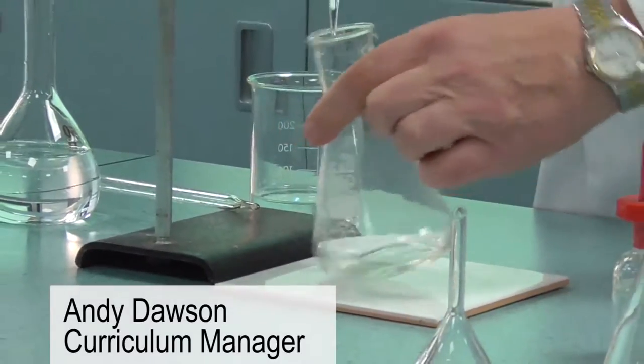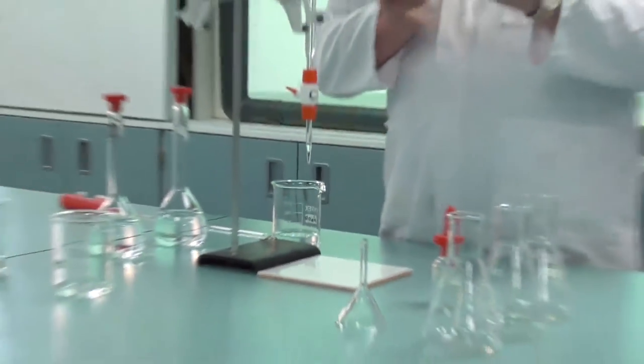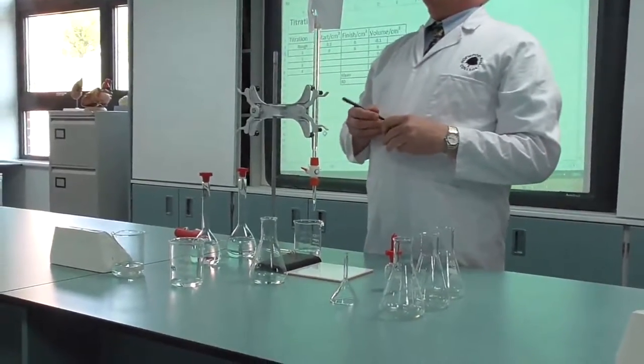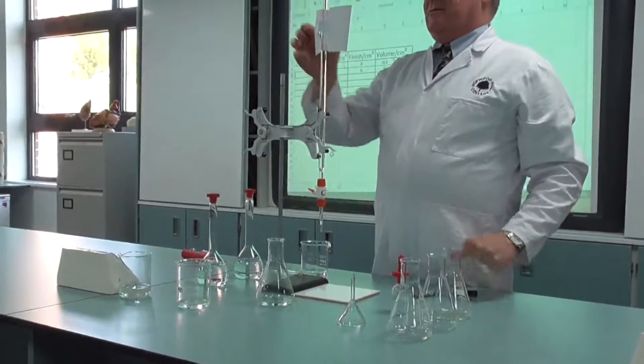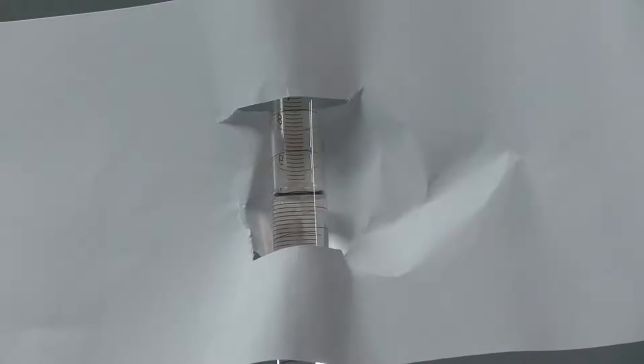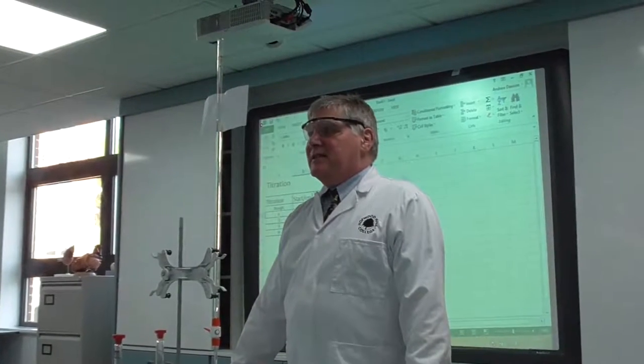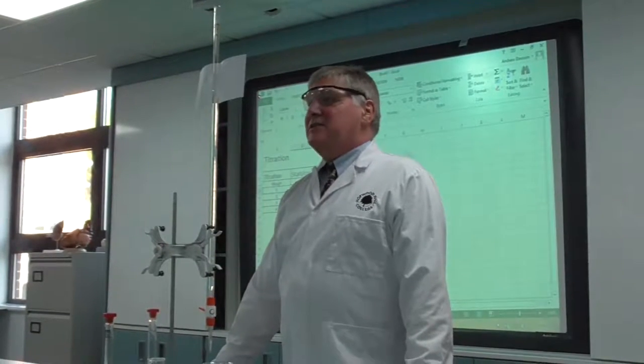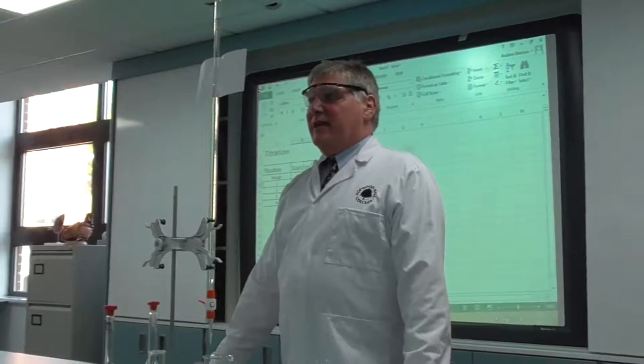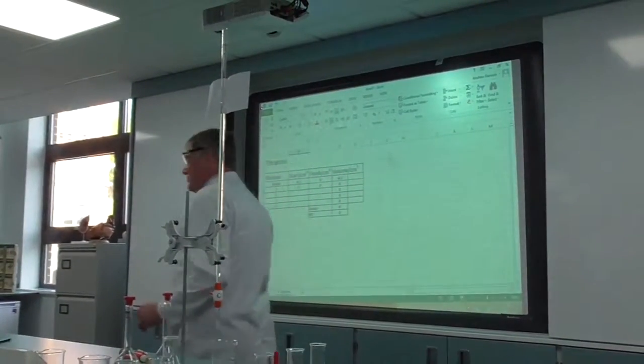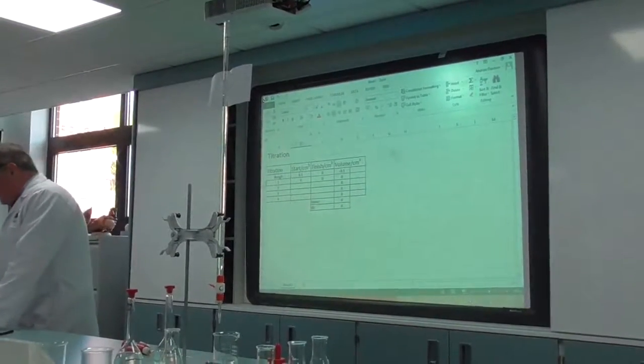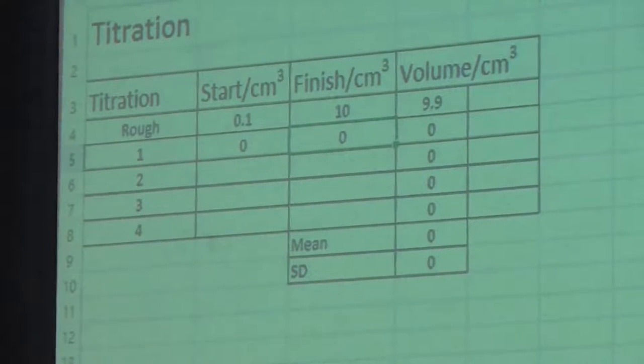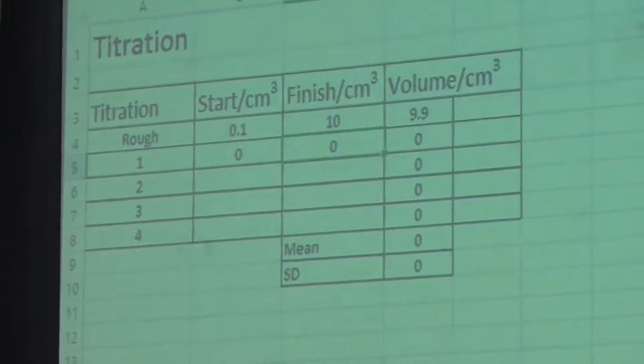Very importantly, we need to mark the conical flask for the rough one and keep it by the side. We're reading off here the endpoint is exactly with the meniscus on 10 centimeter cubed, so we need to add that to the table so we don't forget it and don't get confused. I put this into the spreadsheet: 10. We can now see that the volume used is 9.9.